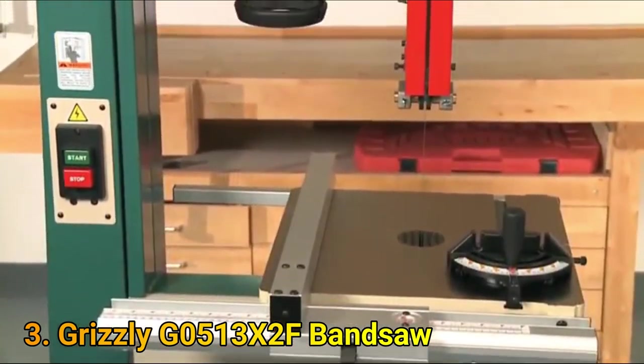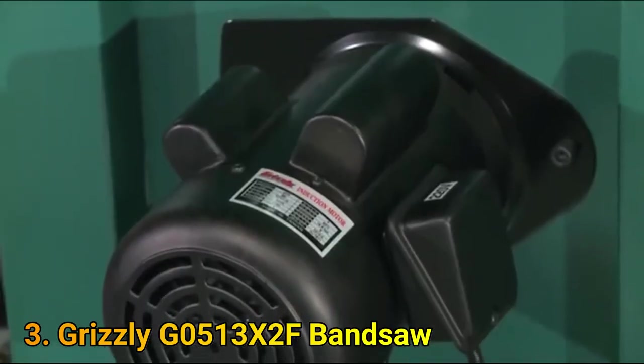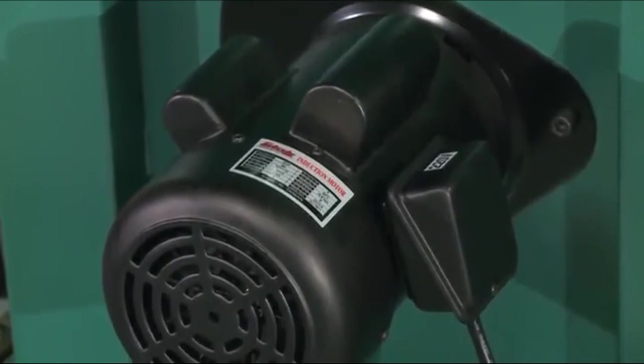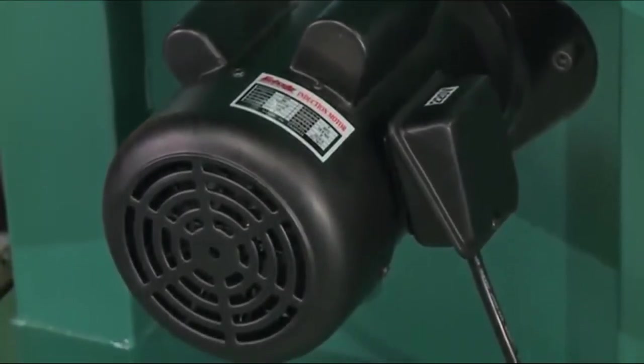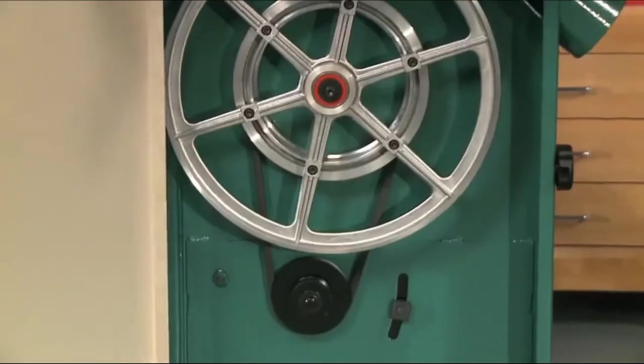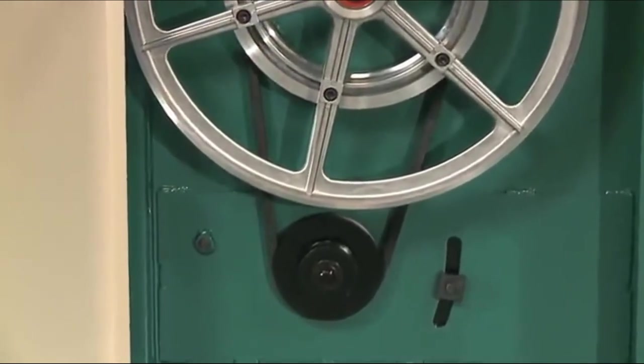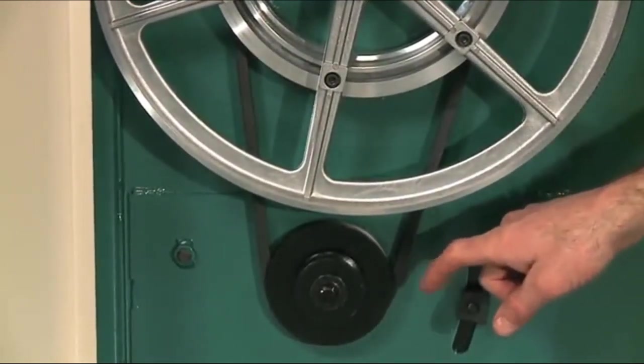This is a full featured saw with big cutting capacities. A strong 2 horsepower motor that is wired for 110 volt 220 volt single phase power and a 12 inch resaw capacity. It comes pre-wired to 220 volts and has the power and capability to resaw all day long. It is a two speed saw with the blade speeds being 1700 and 3500 feet per minute. Speed changes are derived with a step pulley.